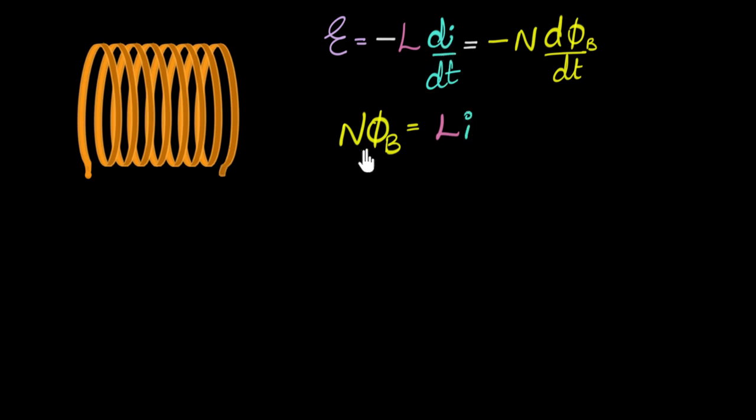And before we go forward, let's pause here for a moment, because this is a cool relationship. What is it saying? This represents the total flux through our solenoid. So it's N times flux through each coil. So this is the total flux equals, it's saying that the total flux is proportional to the current. Does that make sense?